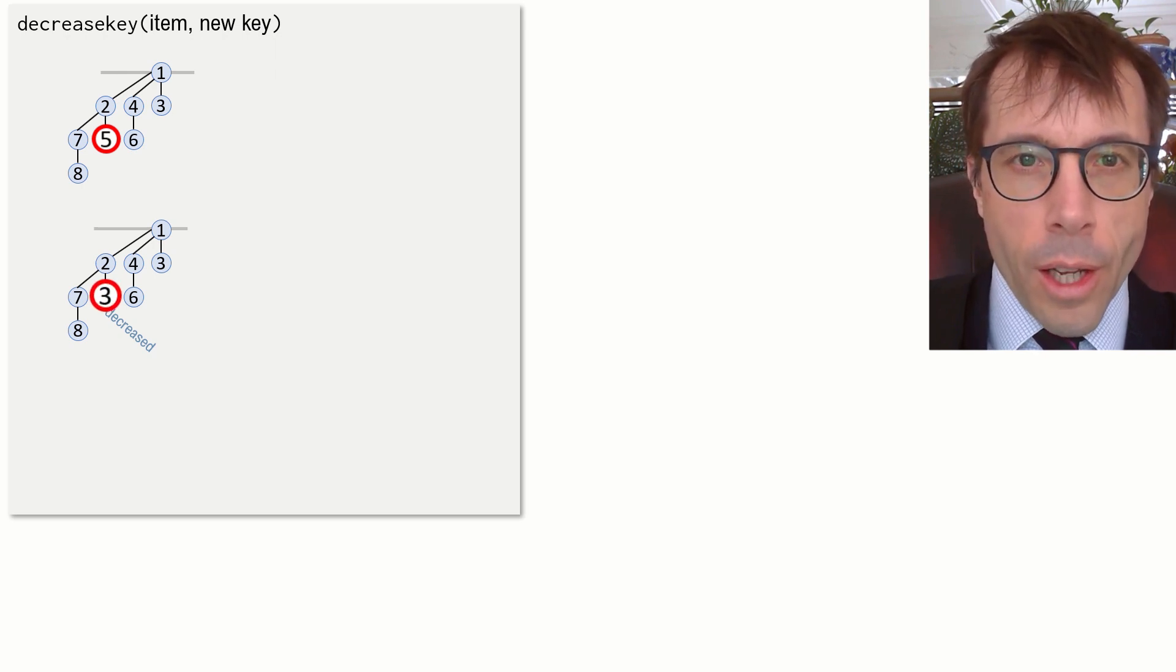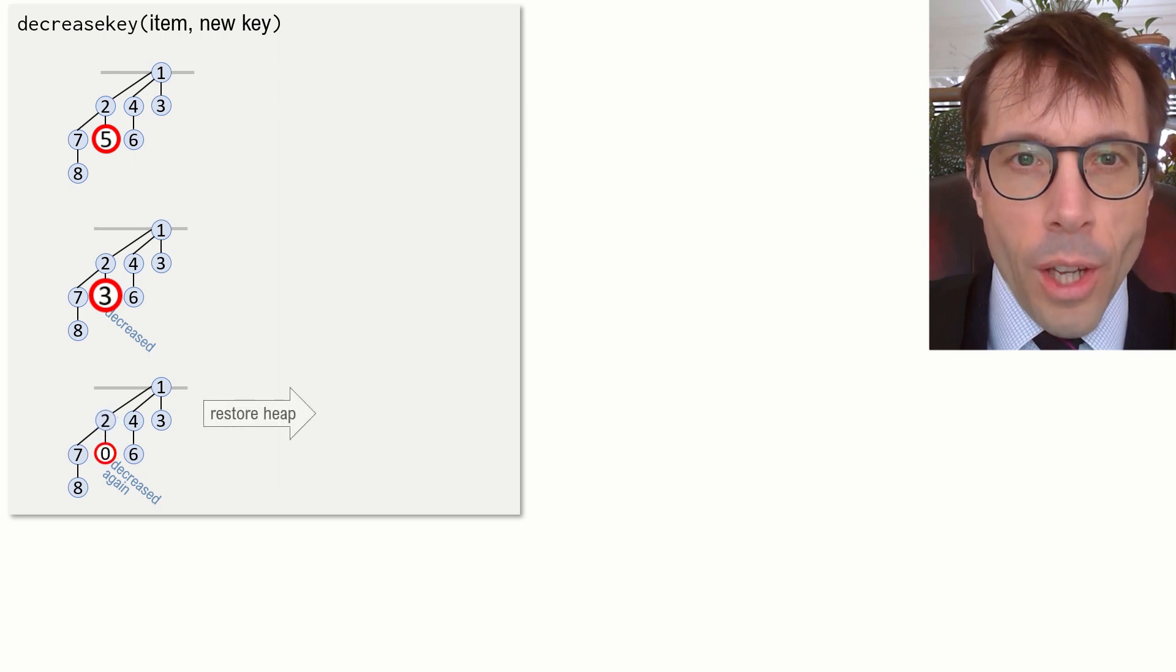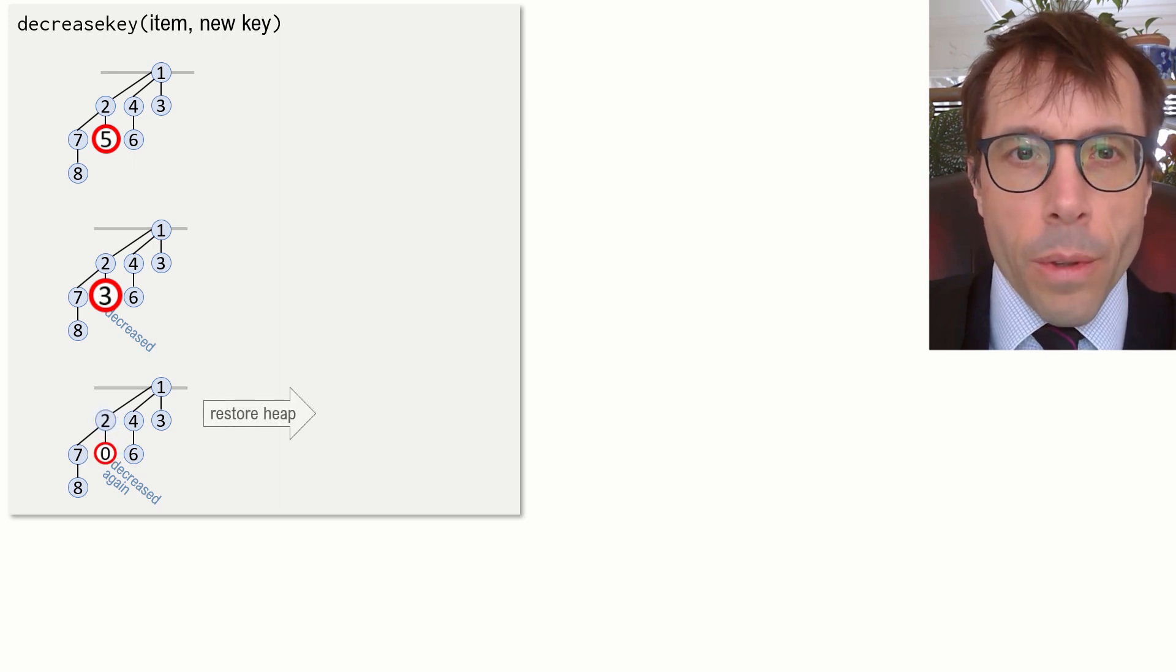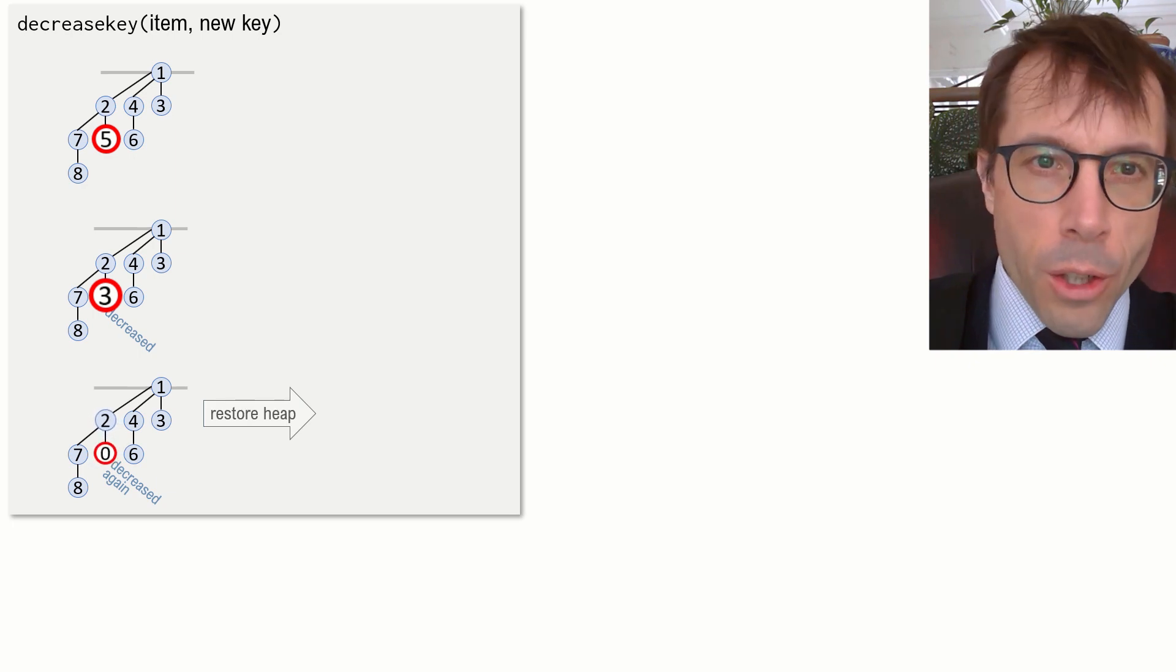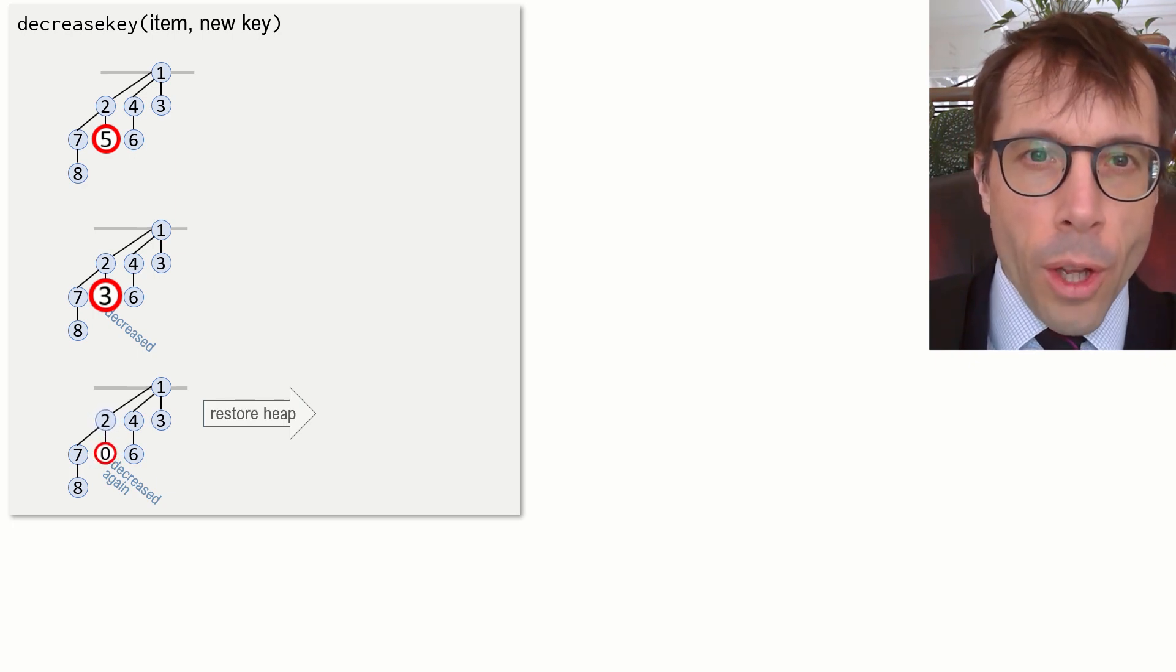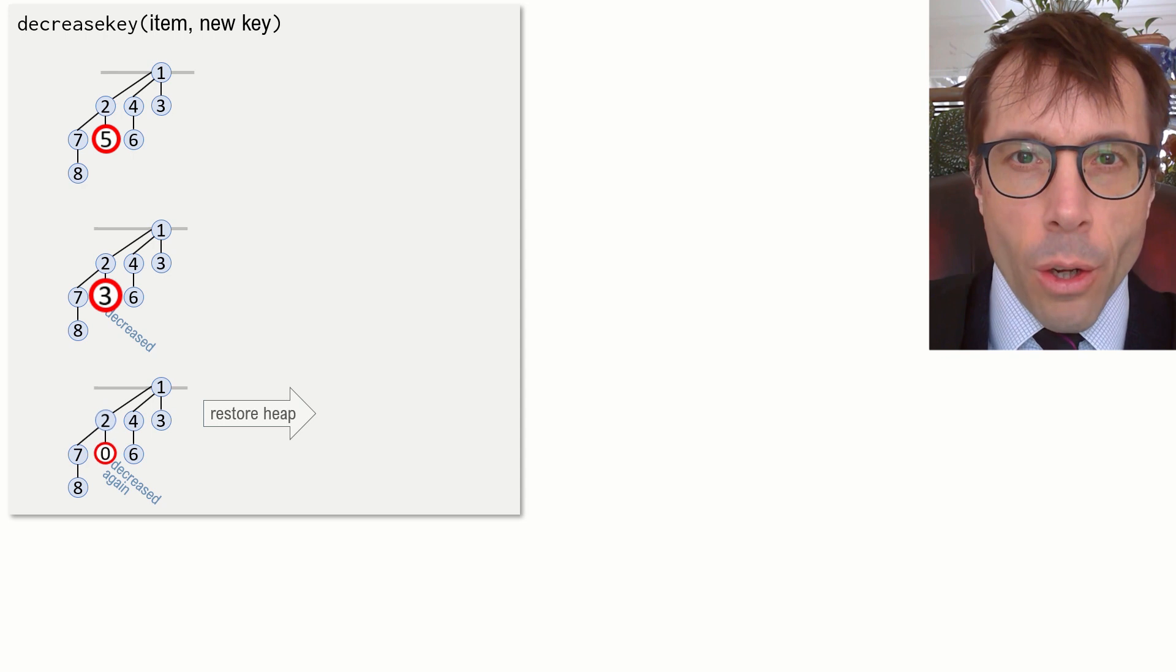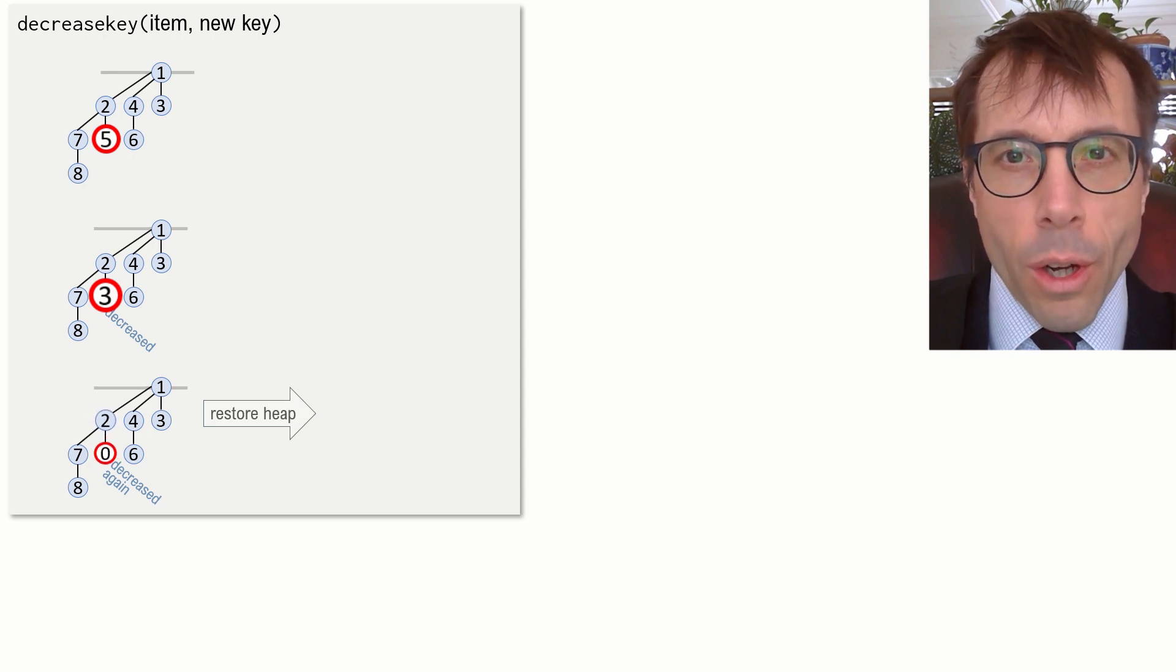Okay, so let's consider the harder case. Let's decrease this some more. Let's decrease it down to zero. Now, there is a problem. There's a heap violation, and we need to do something. For the binomial heap, our answer was bubble up the violating node. Bubble it up as far up as it needs to go. We're going to do something different.